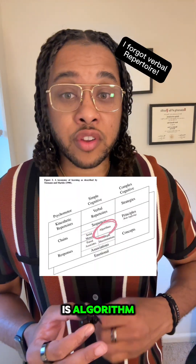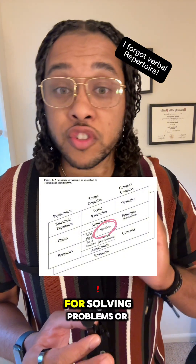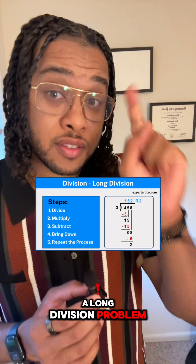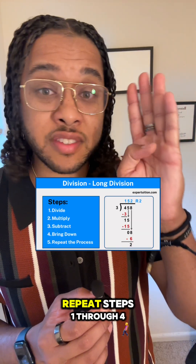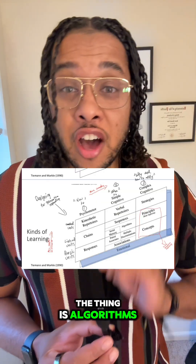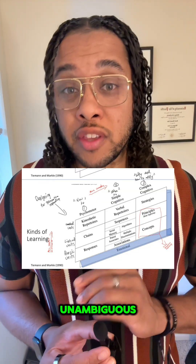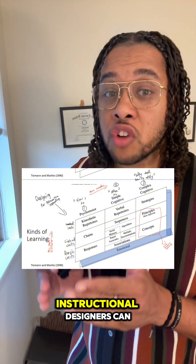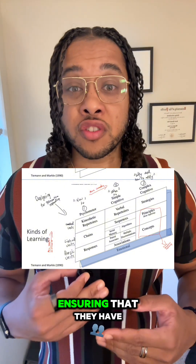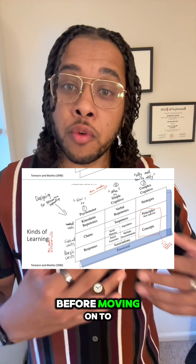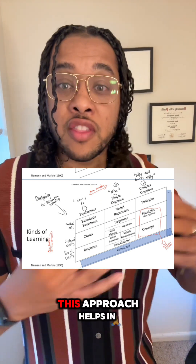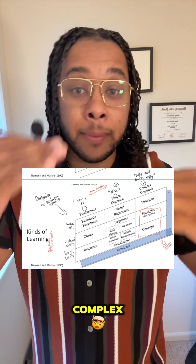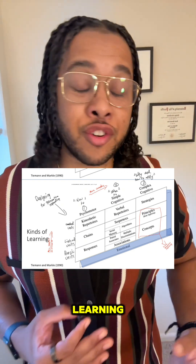Last for this column is algorithm, which is a step-by-step procedure or set of rules for solving problems or accomplishing a task. An example is learning the steps to solve a long division problem: divide, multiply, subtract, bring down the next digit, and repeat until finished. Algorithms are precise, unambiguous, and can be followed mechanically to achieve a desired outcome. By focusing on simple cognitive learning, instructional designers can create effective scaffolding, ensuring learners have the necessary basic knowledge before moving on to more complex cognitive tasks — building from simple to complex and supporting learners at every step.